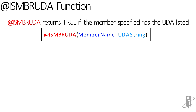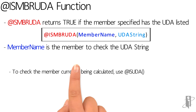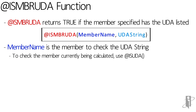If that member has that UDA, it will return true. Normally you specify a specific member name, but you can specify a function that returns a specific member name. Now if you don't want to check a specific member, but instead want to check whatever member is currently being calculated, you wouldn't use this function — you'd use isUDA.